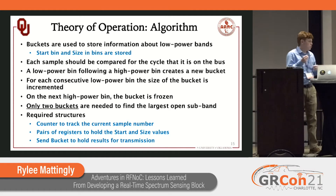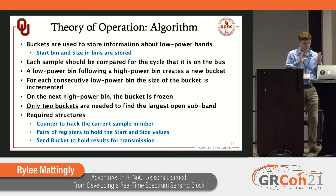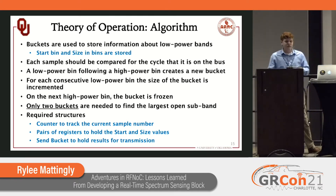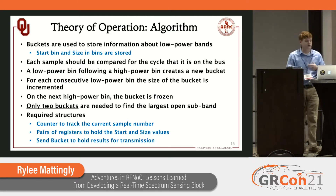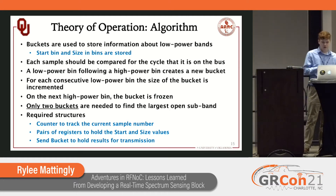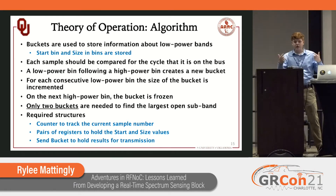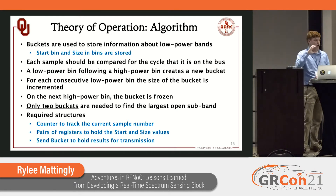We count for every consecutive low power bin what our size of that bucket is going to be. When we finally encounter another high power bin or the end of the frame, we can freeze that bucket. But if we're only looking for the largest bucket, we only need two buckets — whatever our previous bucket was and whatever the bucket we're currently writing into is. When we encounter another low power band, we can just overwrite whichever bucket is the smallest.